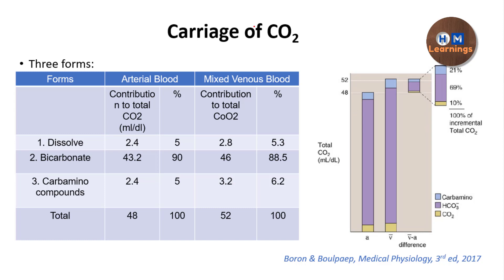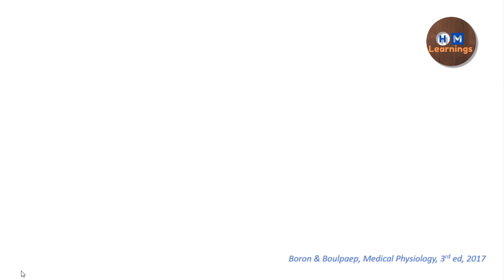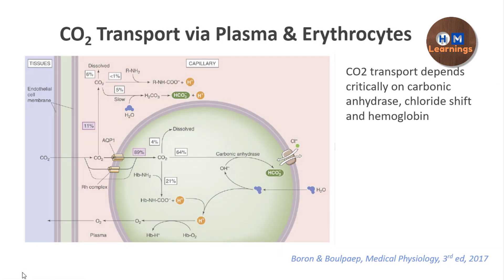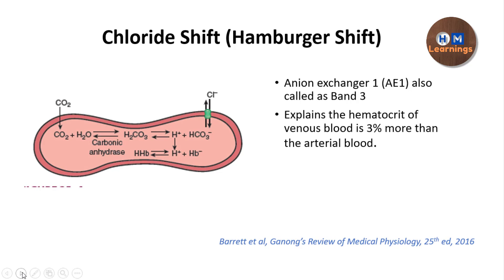There is an increment of about 4 ml per 100 ml of blood. Of this 4 ml increment, 69% is carried as bicarbonate ions, 21% is carried in carbaminohemoglobin, and 10% is carried in the dissolved form. This was the mistake which you need to correct. After this, we discussed carbon dioxide transport via the plasma and erythrocytes and the chloride shift.